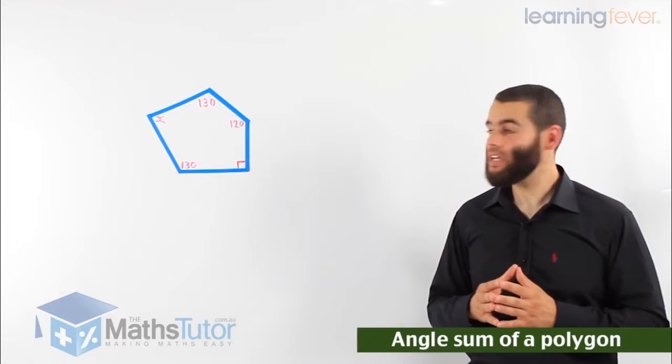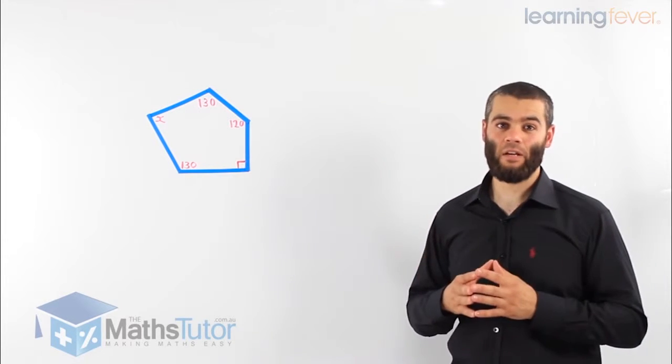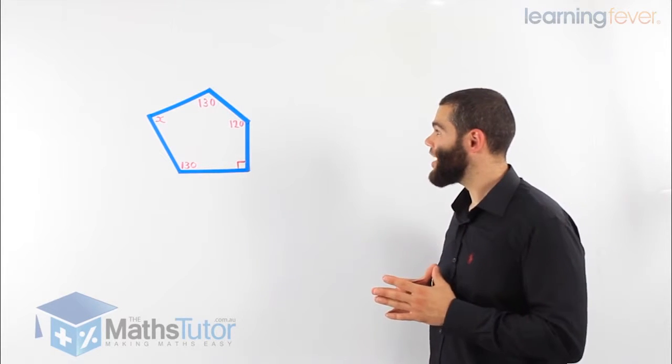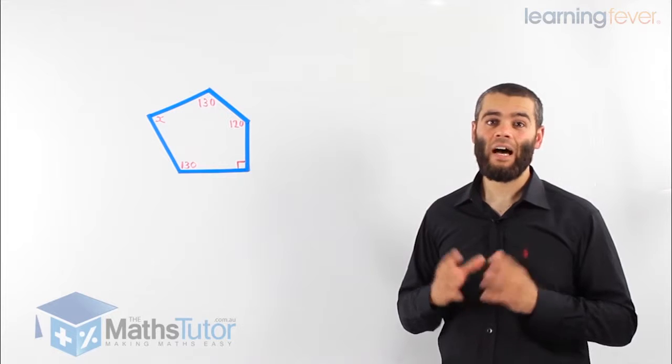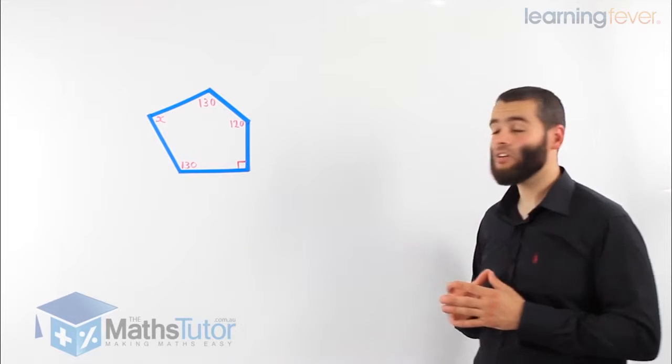Now let's look at this shape here. It is a pentagon, however, it's an irregular pentagon, meaning the sizes of the sides and the angles are different. So here, in this polygon, in this pentagon,